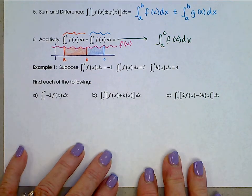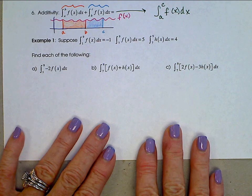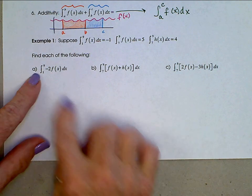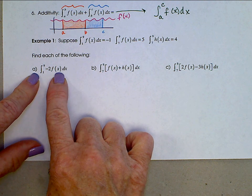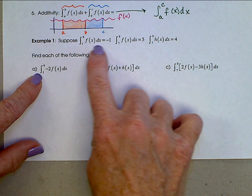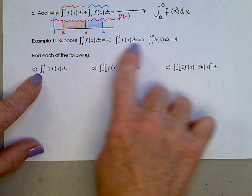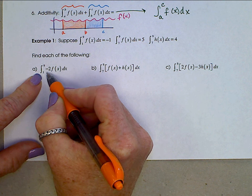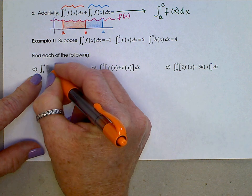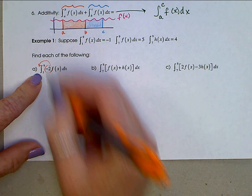All right. Let's just take a look at a few examples here that apply these properties. Here's this first one, the integral from 1 to 9 of negative 2f(x) dx. Well, right up here, you can see I've given you some specific values of these integrals. And we see right here, with this constant multiple in here, we can take this negative 2 and pull it outside of that integral.